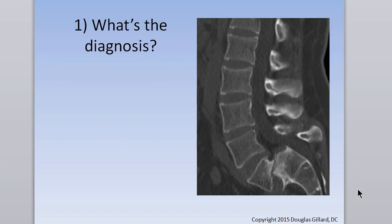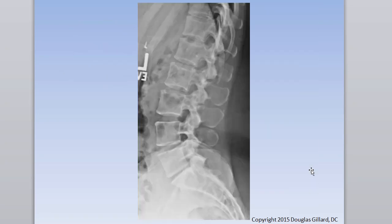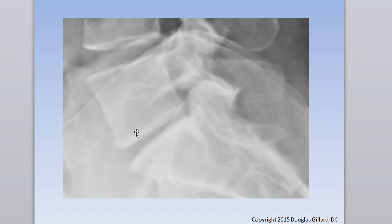This is obviously a spondylolisthesis, so you definitely want to know the Wilts classifications: degenerative spondylolisthesis, isthmic spondylolisthesis, traumatic spondylolisthesis, iatrogenic, and dysplastic spondylolisthesis. Know what a spondylolisthesis is and what the step sign or step-off sign is. You guys did pretty well on that in your quizzes.